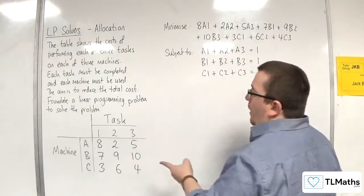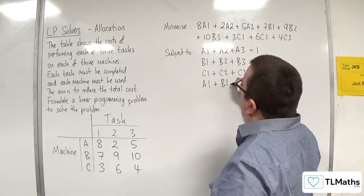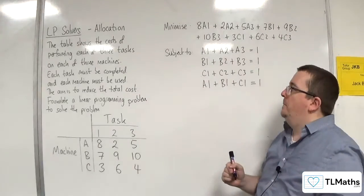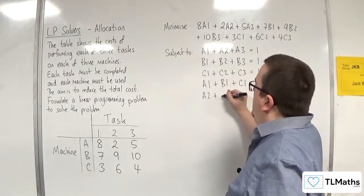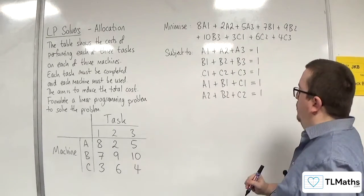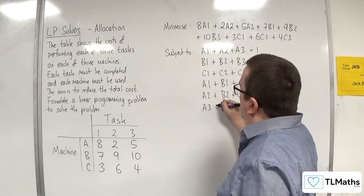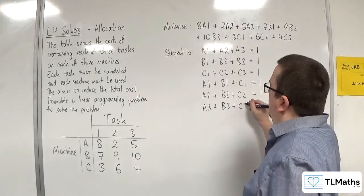So task 1 can only be done by either A, B, or C. Only one of them is allowed. So that's got to be equal to 1. Task 2 can be done by A, B, or C, and that's got to be equal to 1. And task 3 can be done by A, B, or C.